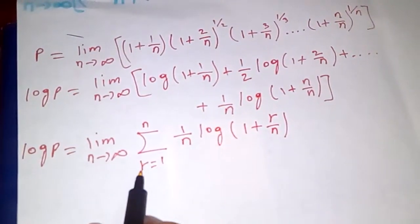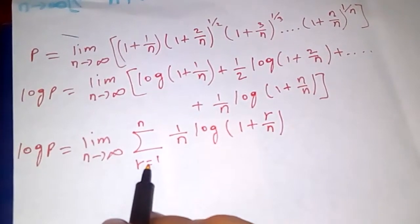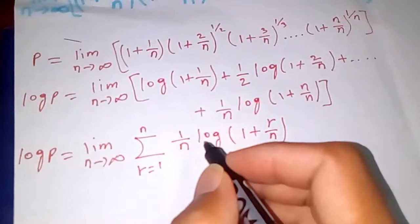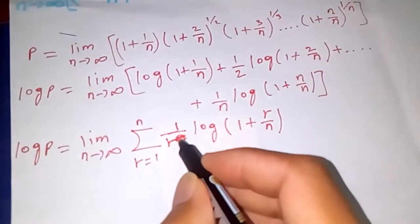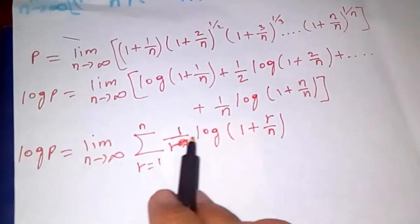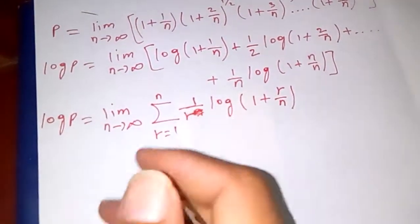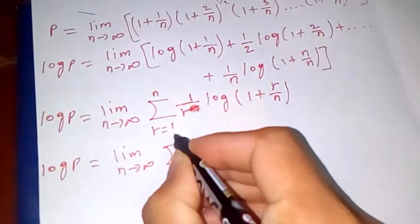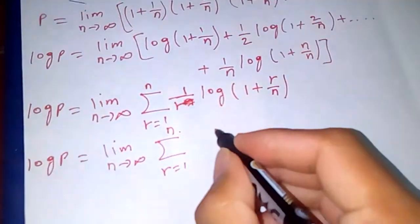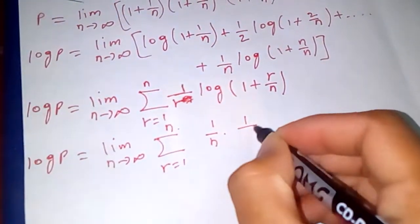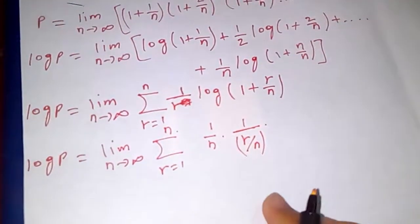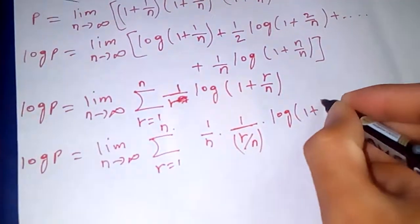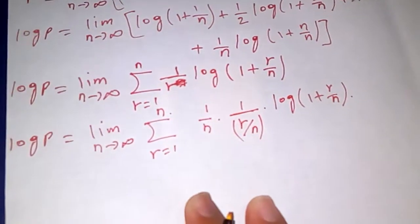This is our summation because if you plug in r equals 1, you get the first term, and so on. Now let's simplify further: limit as n tends to infinity, sum from r equals 1 to n of (1/r) times (1/n) times log(1 plus r/n). I rewrite 1/r as (1/n) divided by (r/n) so we can express things in terms of r/n.